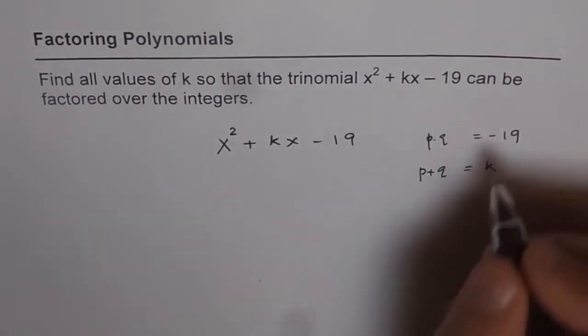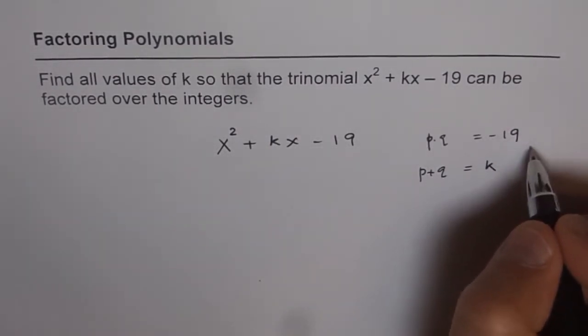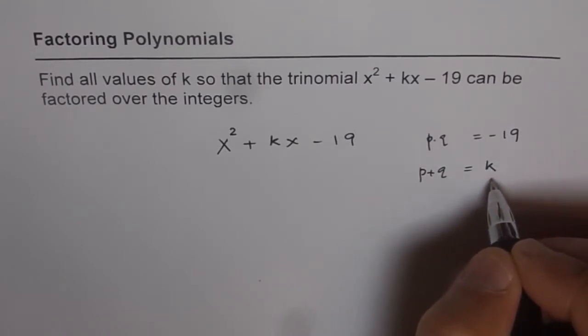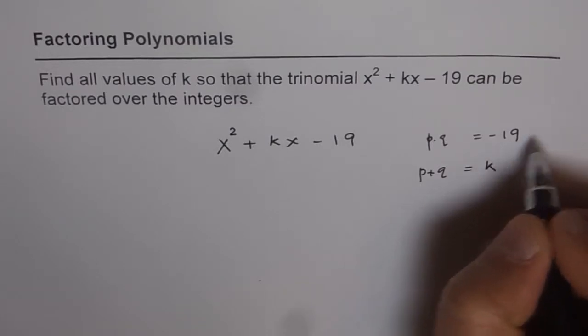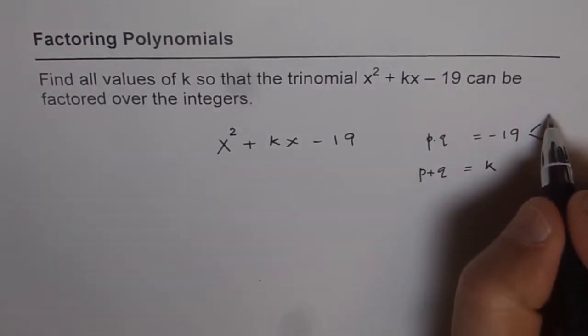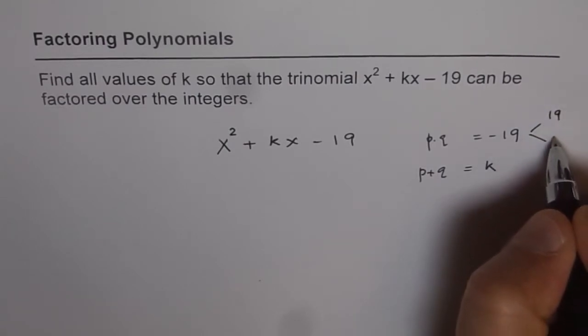So, all the combinations of this product will lead to some sum, which will be our answer. That is the strategy. Now, 19, as you know, is a prime number. So, the only combination is 19 times 1.